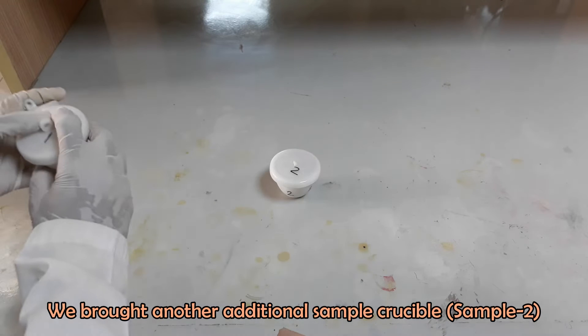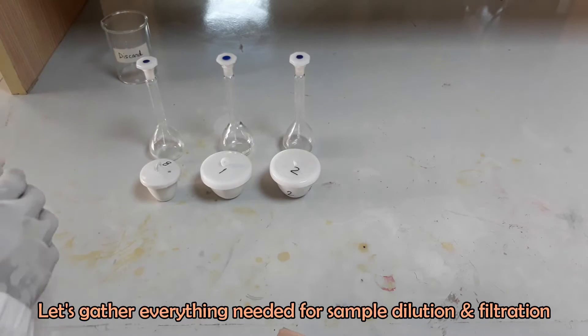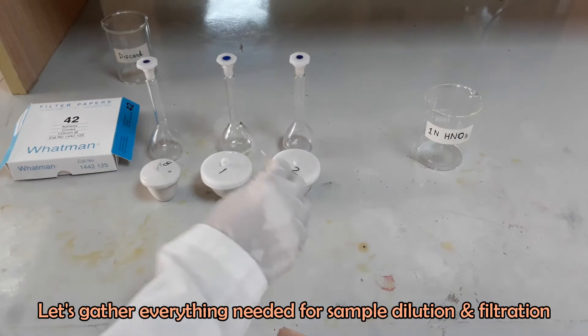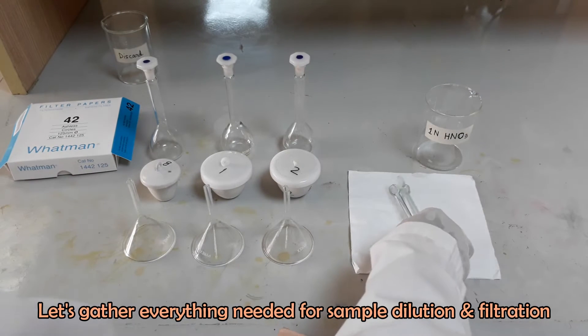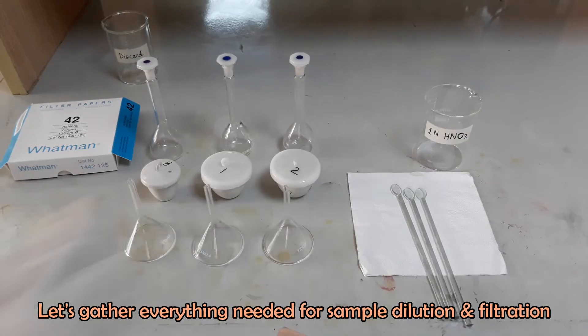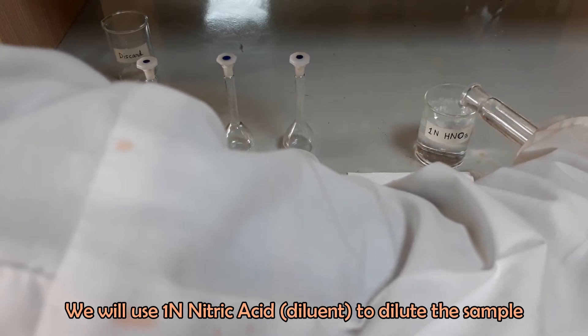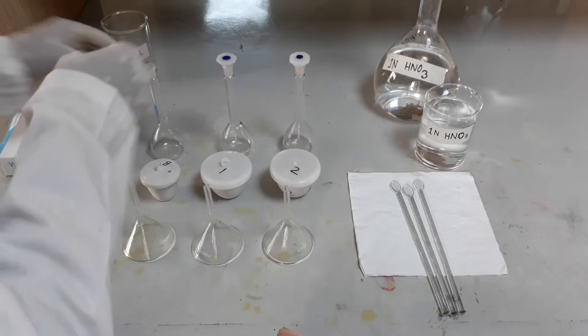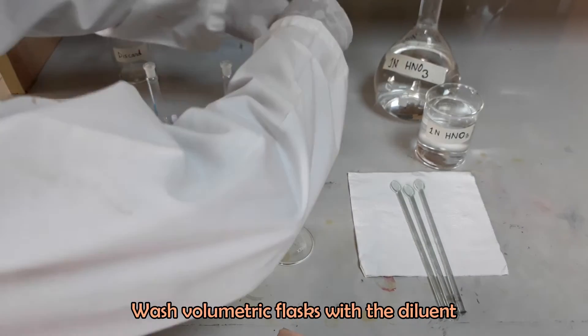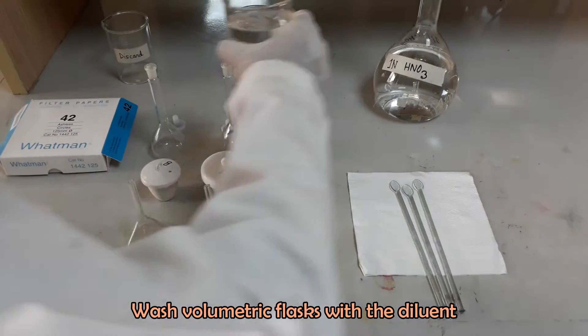We brought another additional ash sample along with the two crucibles. Let's gather everything needed for sample dilution and filtration. We will use one normal nitric acid as diluent to dilute the sample. Wash each of the volumetric flasks with the diluent.